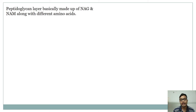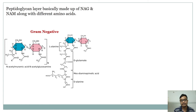The peptidoglycan layer is basically composed of NAG and NAM. NAG stands for N-acetylglucosamine and NAM stands for N-acetylmuramic acid. In gram-negative bacteria, the peptidoglycan layer is thin. The NAM component consists of alanine, glutamate, meso-diaminopimelic acid (DAP), and alanine.